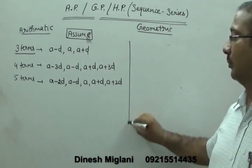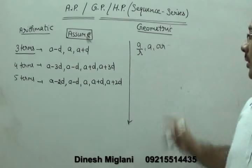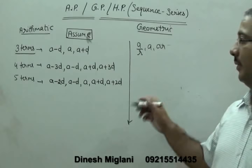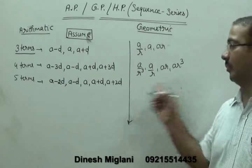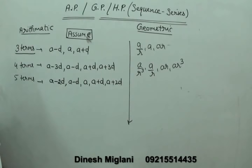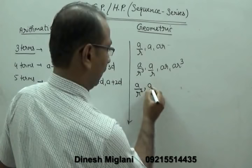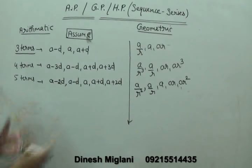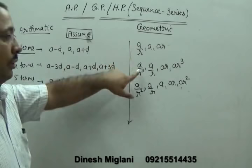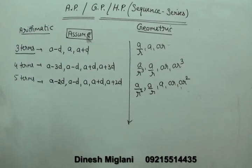In GP, if you have to assume 3 terms, take them as A/R, A, and AR — when the product is given, R cancels out. For 4 terms: A/R³, A/R, AR, AR³ — multiplying all four terms cancels all R. For 5 terms: A/R², A/R, A, AR, AR² — this is always the correct assumption for geometric progression to simplify the problem.